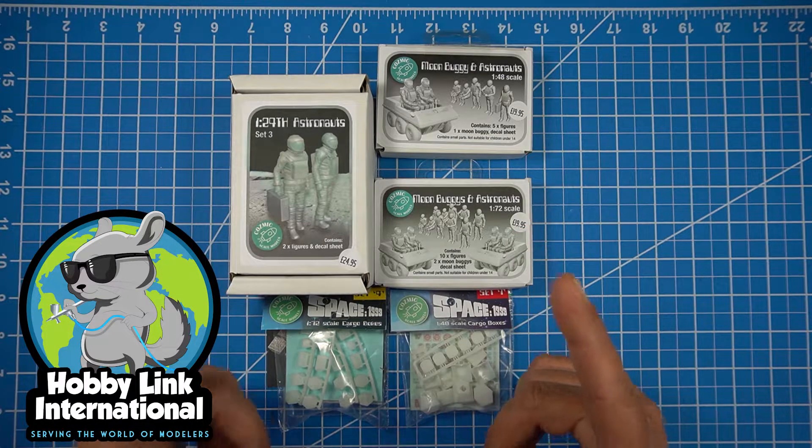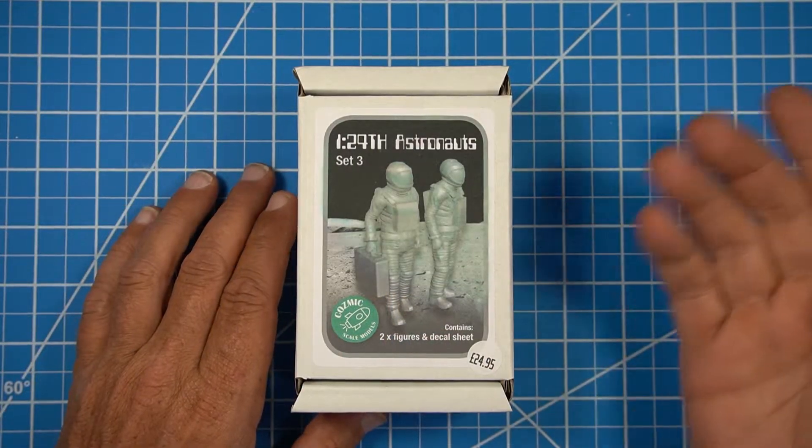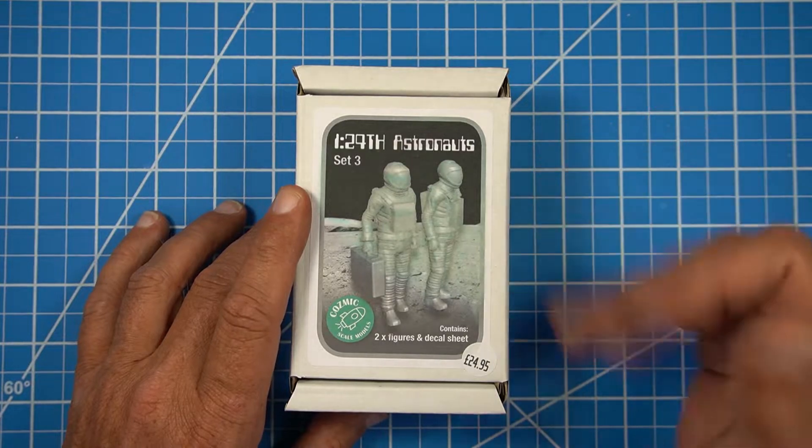Space 1999 builders, we're going to take a look at some aftermarket parts from Cosmic Scale Models just for you. The first thing we're going to take a look at is the 1/24th scale astronauts. This is set number three and this is for Space 1999.